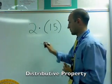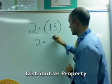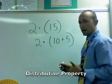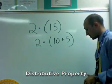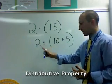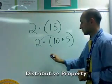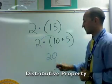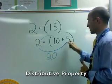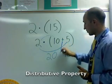So I rewrite it: two times — and fifteen becomes ten plus five. Now I want to take this two and distribute it to both of the numbers. First: two times ten equals twenty. Then I distribute the two to the other number: two times five equals ten. We had addition in the middle, so I bring that down.